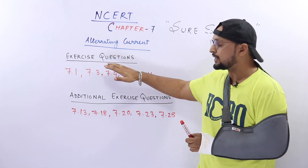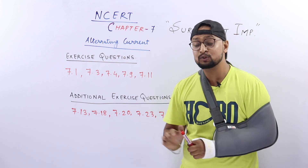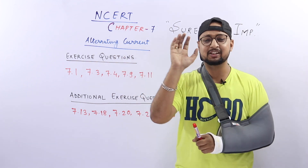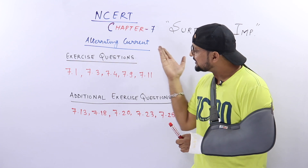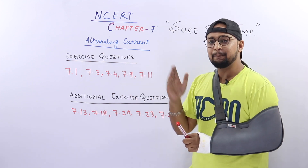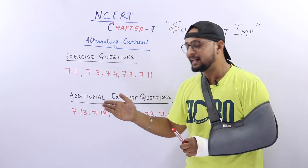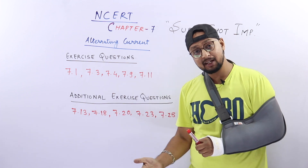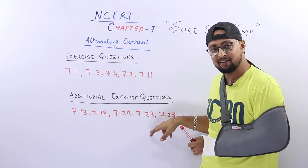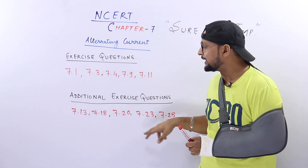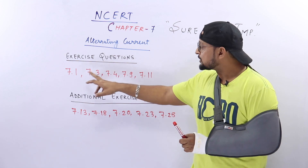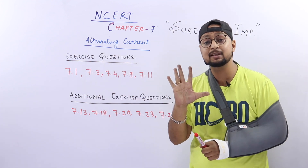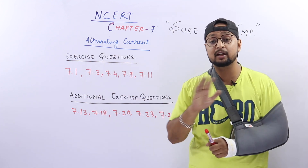तो alternating current में भाई, तुम लोग बार बार comment करके पूछते हो. मैं साफ लिखता हूं यार — यहां पे exercise questions हैं, तो exercise questions ही होंगे ना. Examples अलग से लिख दो, वैसे तो numbers already वहां mentioned होते हैं. So exercise questions में 1, 2, 3, 4, 5 — बस यह 5 questions अच्छे से कर लो.